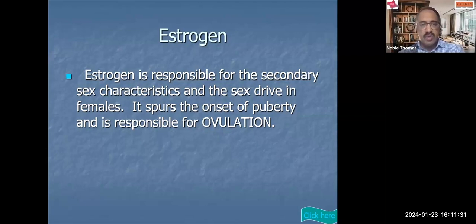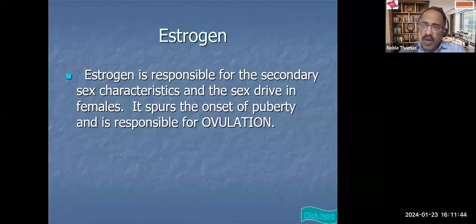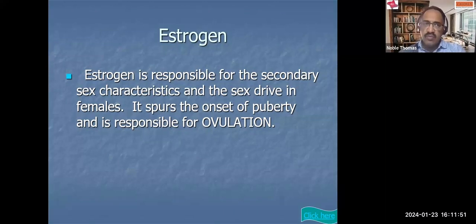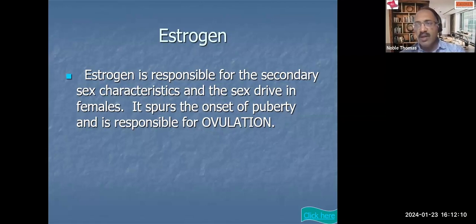Estrogen is responsible for ovulation and also for the secondary sexual characters. Under the influence of estrogen, the follicles — which are probable ovums present inside the ovaries — develop and convert into an ovum. It takes around 14 days for the conversion of a follicle into an ovum. Once it completes its growth, it is released out of the ovary, and that process is called ovulation. Ovulation happens exactly on the 14th day.